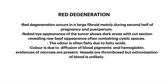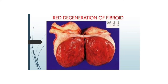Red degeneration is really important because it is commonly seen in pregnancy. It occurs in large fibroids mainly during the second half of pregnancy and puerperium. The naked eye appearance shows dark areas with a raw beef appearance on cut section, often containing cystic spaces. The color is due to diffusion of blood pigments and hemoglobin. Evidences of necrosis are also present, and the vessels are thrombosed. This picture shows red degeneration of a fibroid.